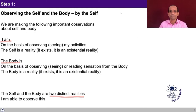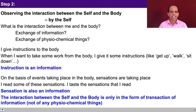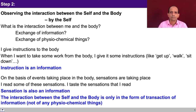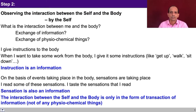This is what we are addressing in step one. In step two, we are observing the interaction between the self and the body — and that is happening by the self. What is the interaction between me and the body? Is it an exchange of information or exchange of some physiochemical things? What kind of interaction is taking place? Is it something physiochemical? Am I some physiochemical effect of the body, or am I a distinct conscious entity? If I am a distinct entity, then the physiochemical interaction will not take place with me because I am not physiochemical.